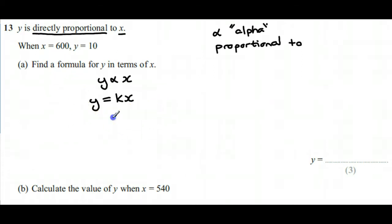It tells us that when x is 600, so if you take k and times it by 600, you should get 10. Therefore we can work out the value of k by dividing both sides of this equation by 600. And that means that k is 1/60, if you just cancel the factor of 10 in the top and the bottom of that fraction.